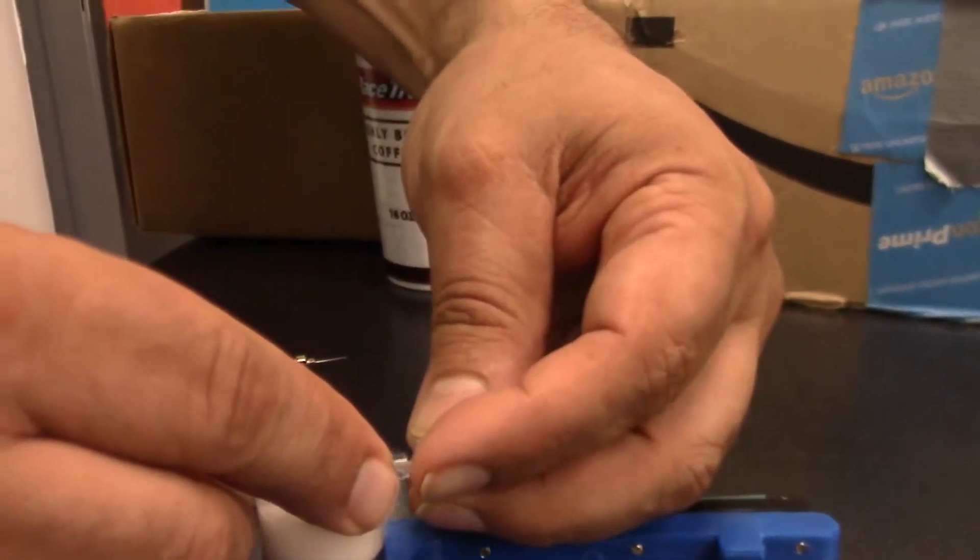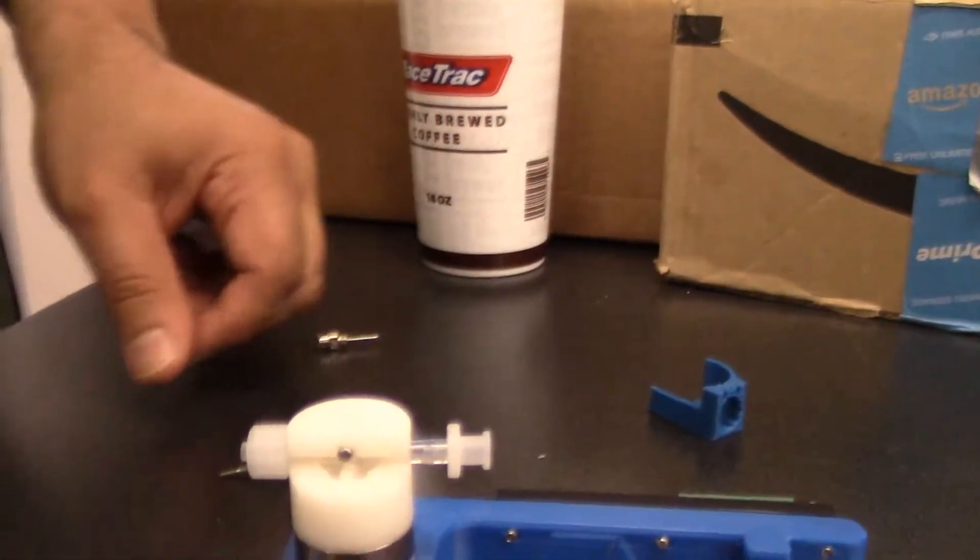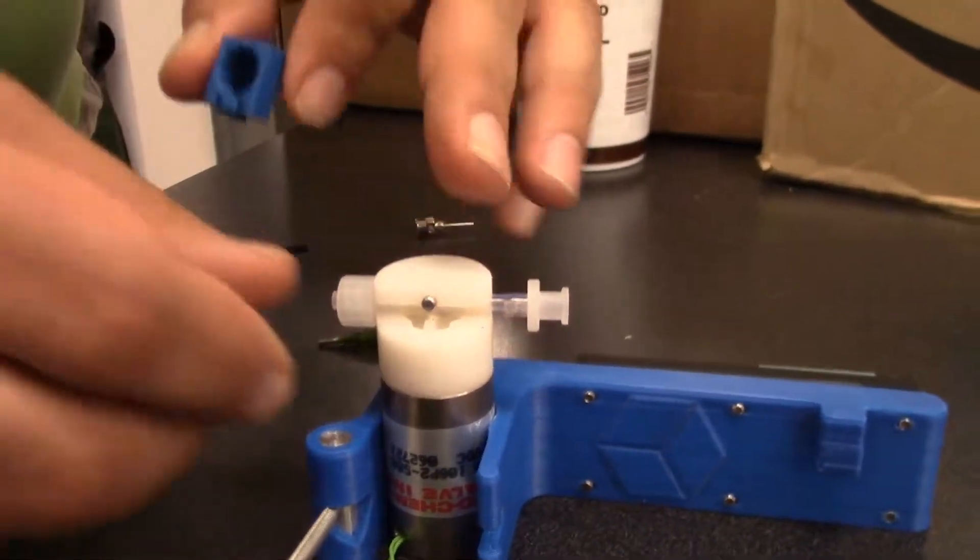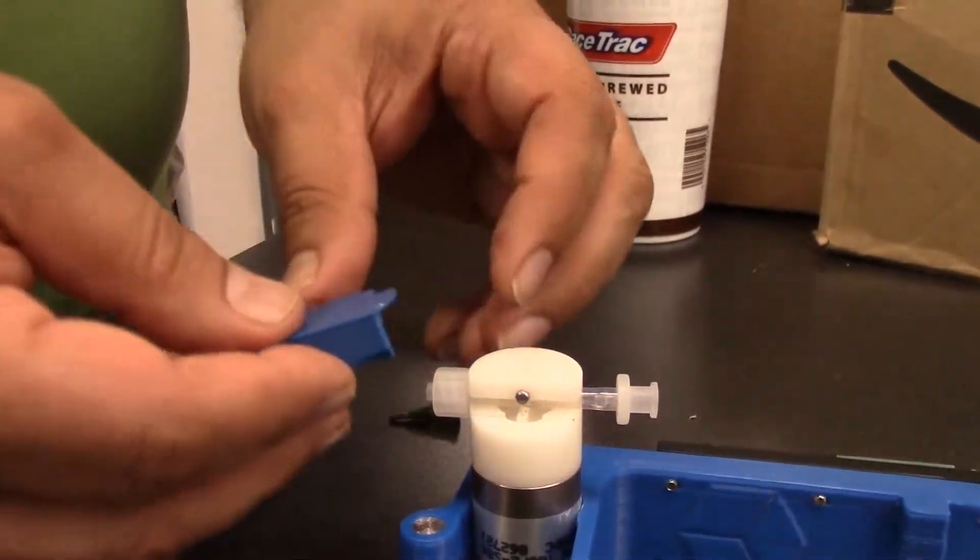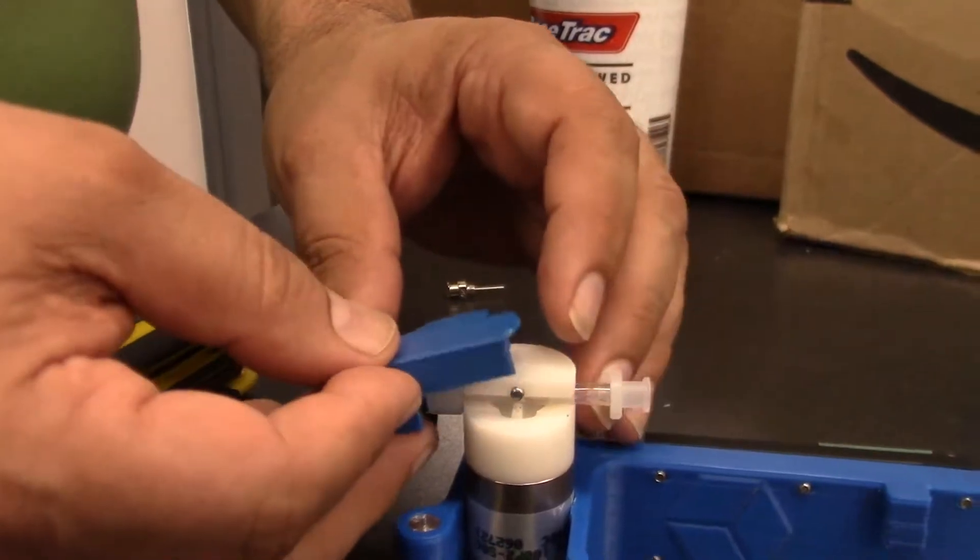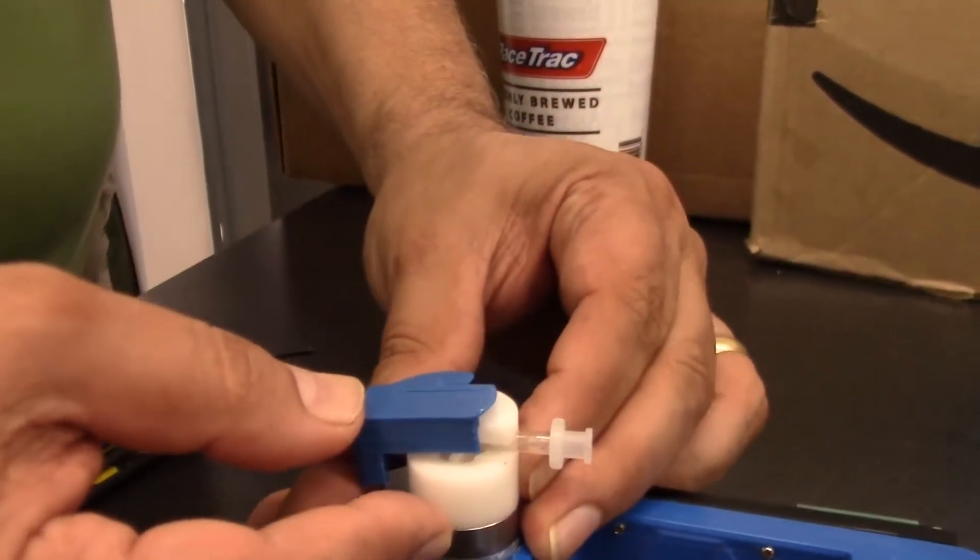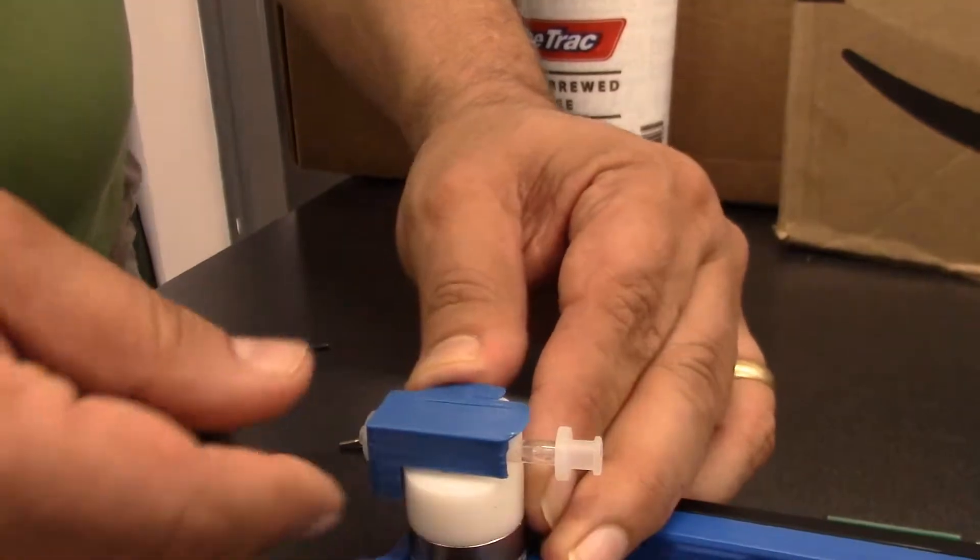Put your little barbed connector back in the top. Now this cap is going to prevent the bottom from rotating. It's also going to keep everything at a rigid position. So just slide this up and it snaps on like that.